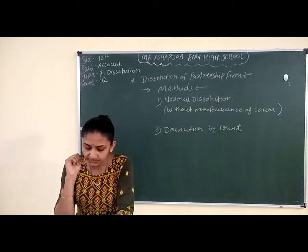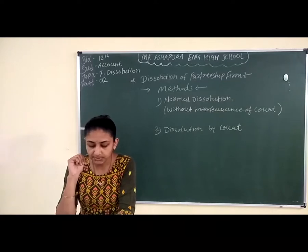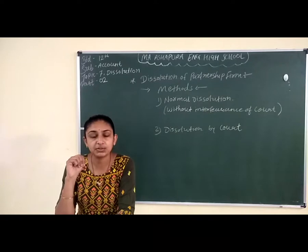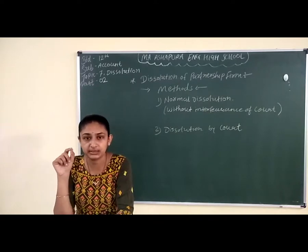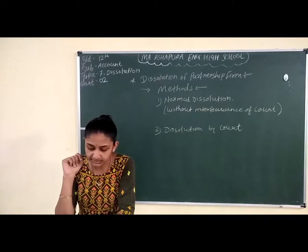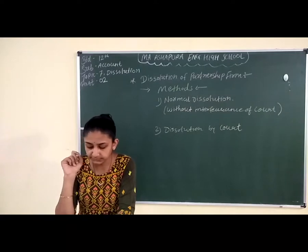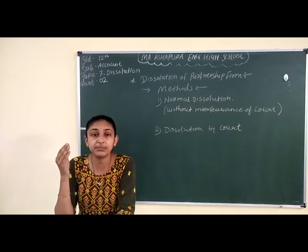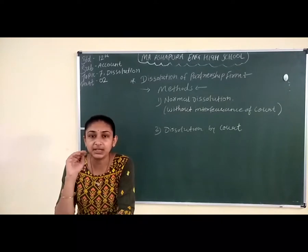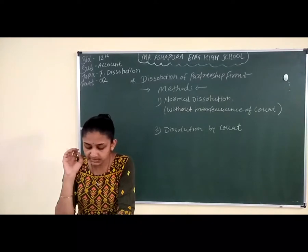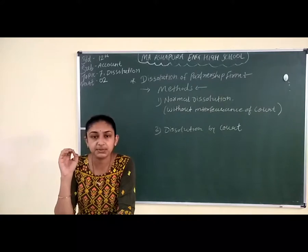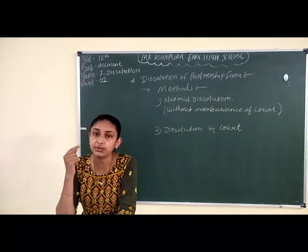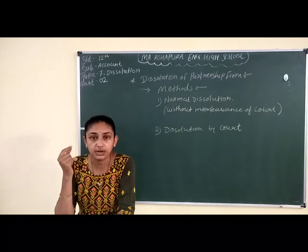Second is when a partner becomes permanently incapable of performing his duty as a partner — अगर कोई भी partner permanently incapable हो जाता है to perform his duty. Third is when a partner undertakes misconduct against the partnership firm and against business of the firm — अगर कोई भी partner अपने business के प्रति liable नहीं है, means वो misconduct against partnership firm कर रहा है, तो ऐसी condition में भी court उस company को dissolve करने का order दे सकता है।